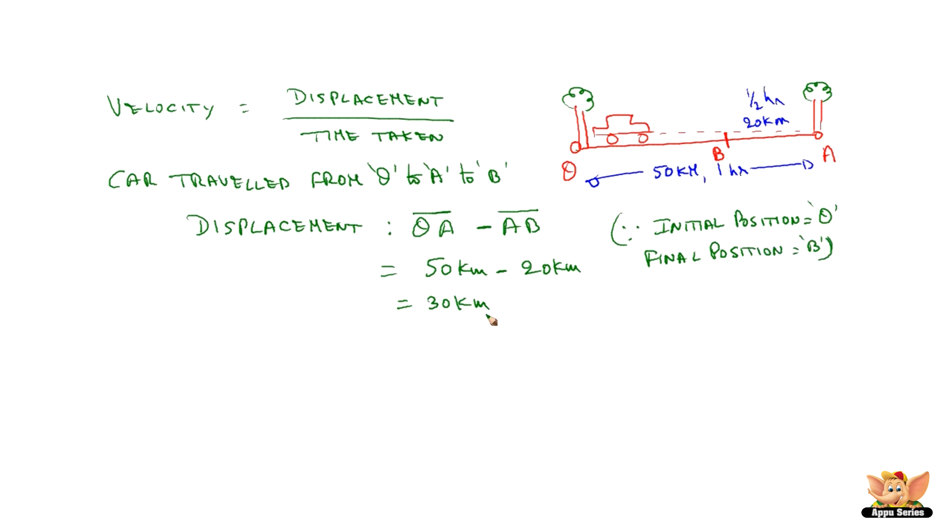So the displacement is 30 km and time taken for this displacement is 1 hour from O to A plus half an hour from A to B. So it is 1 plus half an hour which is 3 by 2 hour.